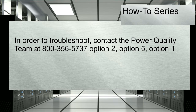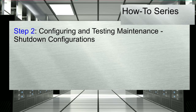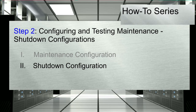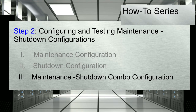Step 2: Configuring maintenance and shutdown configurations. Once the UPS supporting the selected ESXi host experiences a power event, IPM will trigger a pre-configured mode of escalation, which will place the host in maintenance mode or shutdown mode. We will review and demonstrate how to set up the parameters for three escalation configurations: 1. Maintenance configuration. 2. Shutdown configuration. 3. Maintenance shutdown combo configuration.